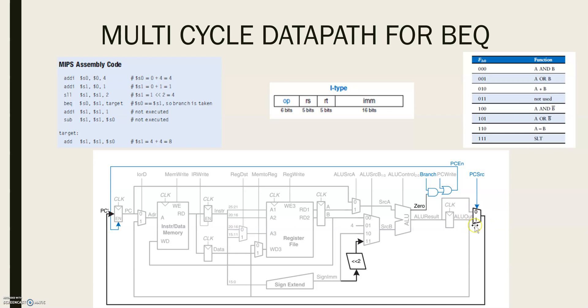A new multiplexer controlled by PCSRC chooses which signal should be sent to PC. The program counter should be written either when PCWrite is asserted or when a branch is taken. A new control signal branch indicates that the BEQ instruction is being executed. The branch is taken if zero is also asserted.